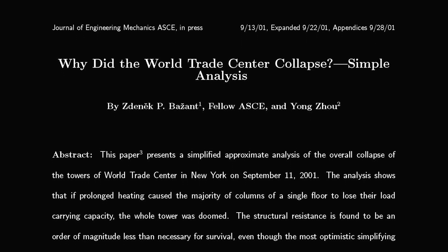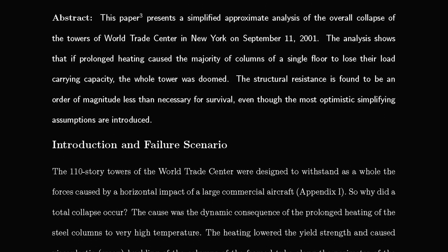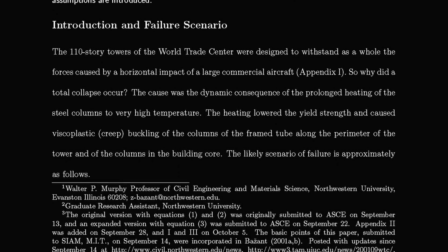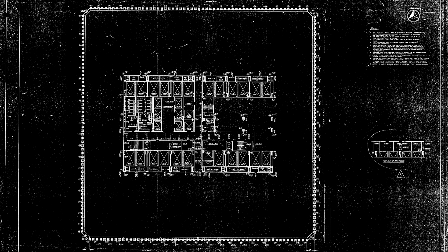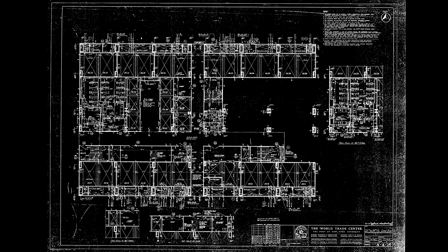Dr. Bazant, a civil engineering professor at Northwestern University, wrote a paper on September 13th, 2001 — two days after 9/11 — saying it would take a 20 or 30 G load or impulse to cause the towers' collapse. The columns in a building can handle more than what's on them; the demand is much less than their capacity. The demand on the exterior columns was about 20% in the Twin Towers, and about 33% on the core columns, which had a 47-column core and 236 exterior columns.